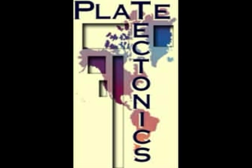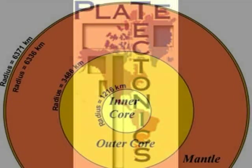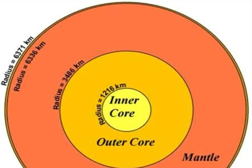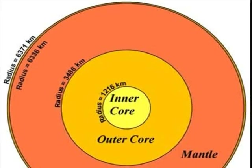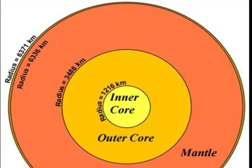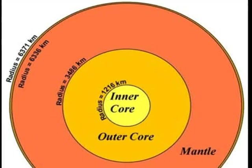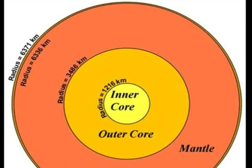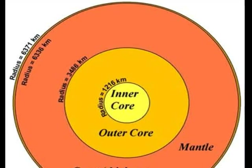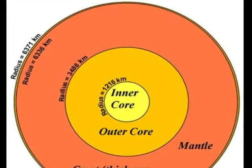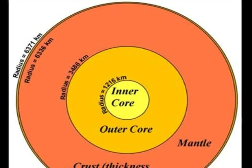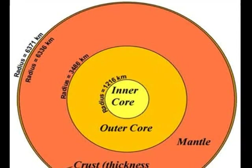Plate tectonics is a theory that explains how lithospheric plates move and cause geologic features. The crust is the thinnest and outer layer of the Earth. It's made out of rock. There are two kinds of crusts: oceanic crust and continental crust.